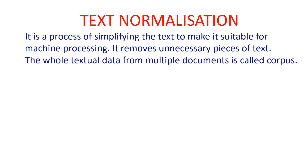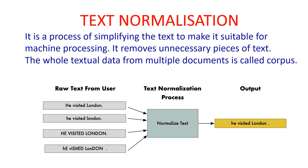For natural language processing, first of all text normalization is done. Text normalization is a process of simplifying the text to make it suitable for machine processing. It removes unnecessary pieces of text. The whole textual data from multiple documents is called a corpus.